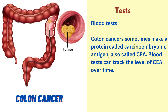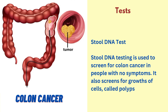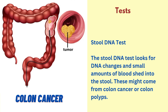Colon cancers sometimes make a protein called carcinoembryonic antigen, also called CEA. Blood tests can track the level of CEA over time, and the results might show whether the cancer is responding to treatment. Stool DNA testing is used to screen for colon cancer in people with no symptoms. It also screens for growths of cells called polyps. The stool DNA test looks for DNA changes and small amounts of blood shed into the stool, which might come from colon cancer or colon polyps.